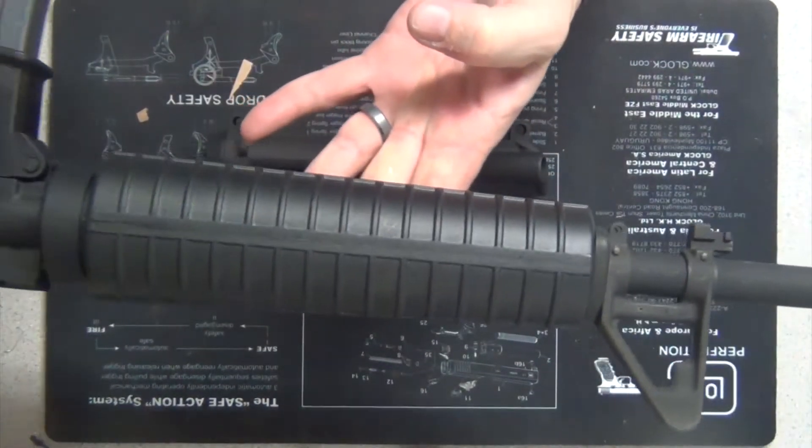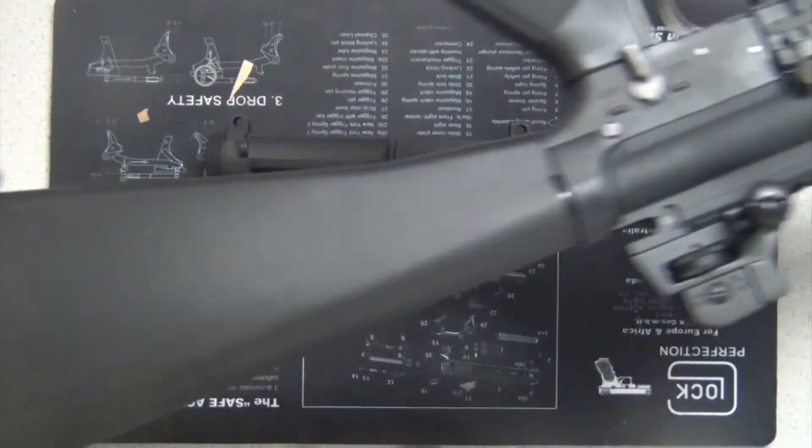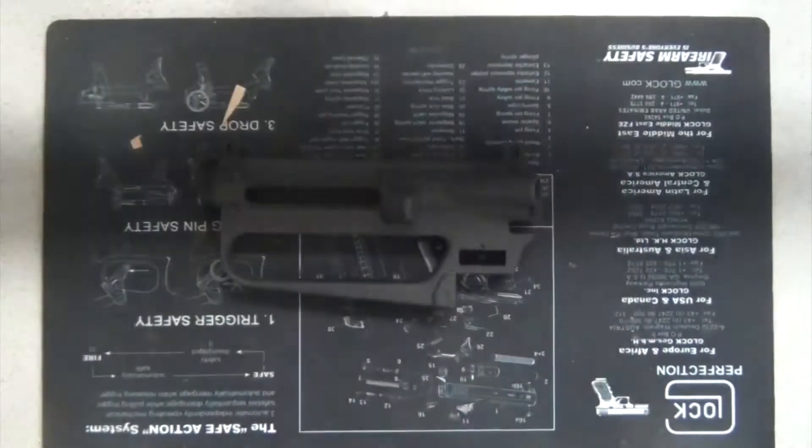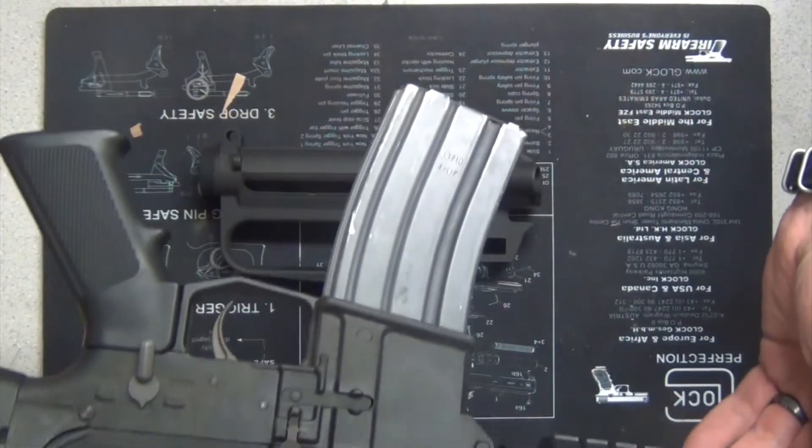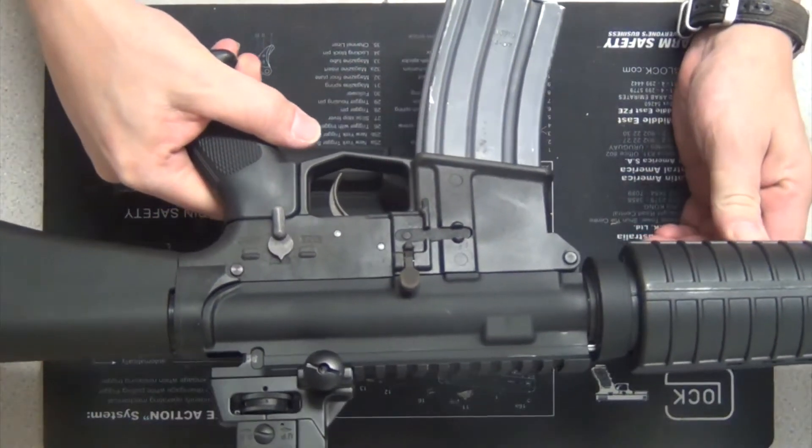That fore-end. That stock. That shitty, shitty grip. The aluminum magazine. Yeah. I'm going to turn this into an A2.